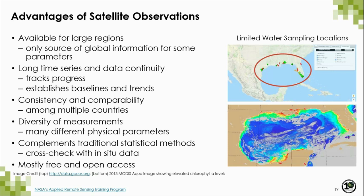While there are many differences between data from various remote sensing sources, there are some common characteristics, including the scale and availability of remotely sensed data for large regions that are sometimes inaccessible. Many satellites have been in operation for a long time, assisting in the ability to establish landscape baselines and track changes over time. There are consistent measurements globally that can easily be compared across regions, and there's a diversity of measurements from spectral reflectance that can be used to monitor vegetation health, water quality, and other parameters. Remotely sensed data can be used in conjunction with field-based observations for cross-validation, and data are mostly free and open access — all data available from NASA are free.